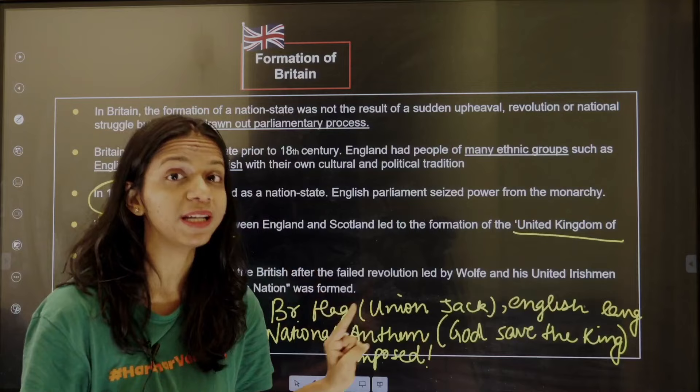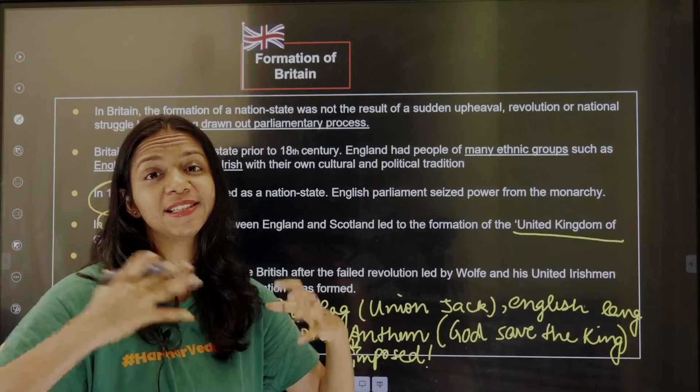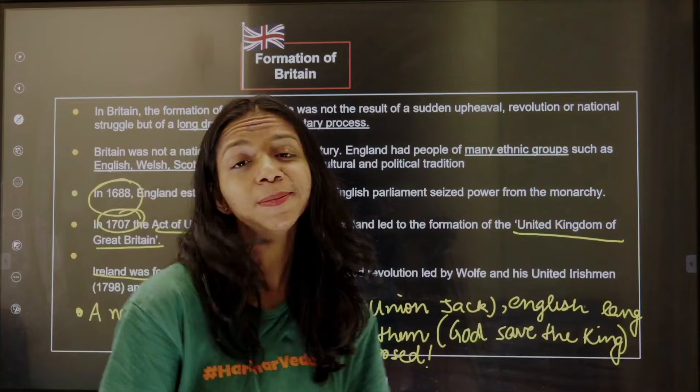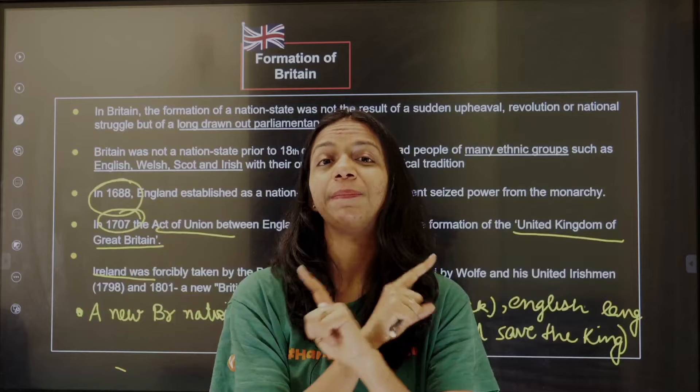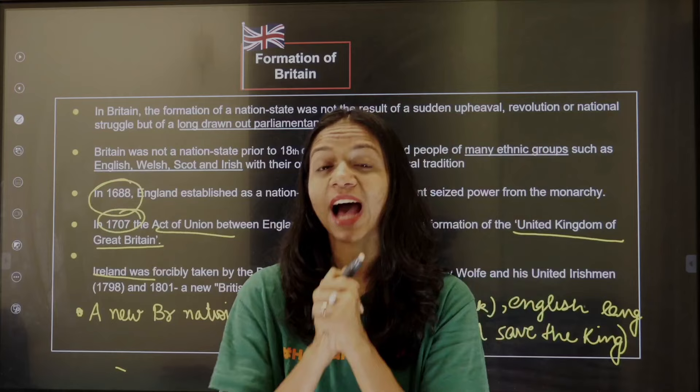After that, the English culture and language dominated, and English dominance was established in the parliament. Then the story comes to Ireland. In Ireland, there was a majority of Catholics, but because the Protestants had the support of the British, they had completely suppressed the Catholics. After a revolution, in 1801, Ireland also became part of this union — the United Kingdom of Great Britain.